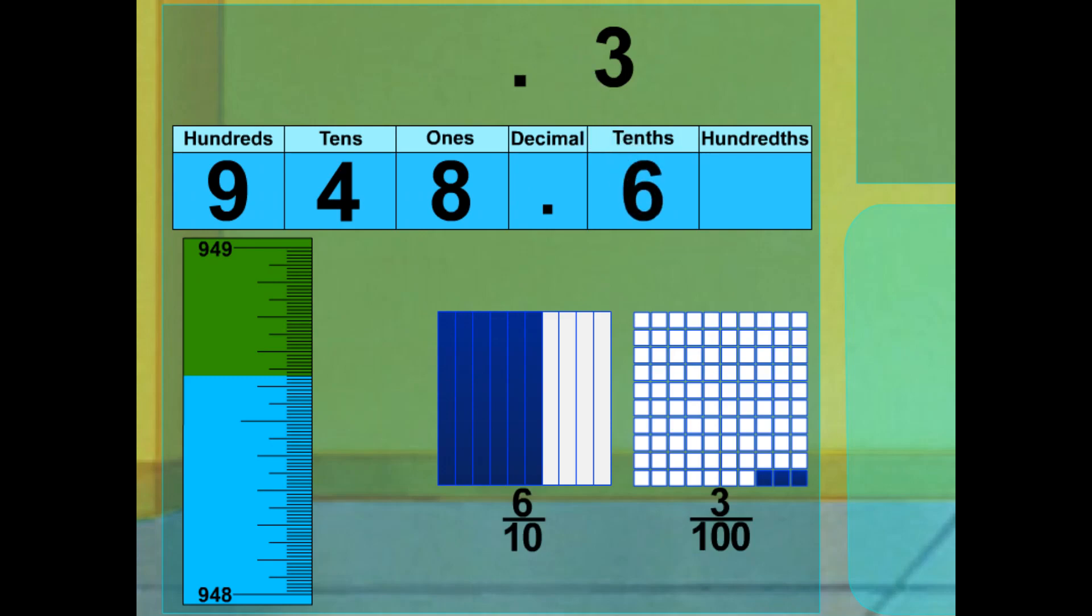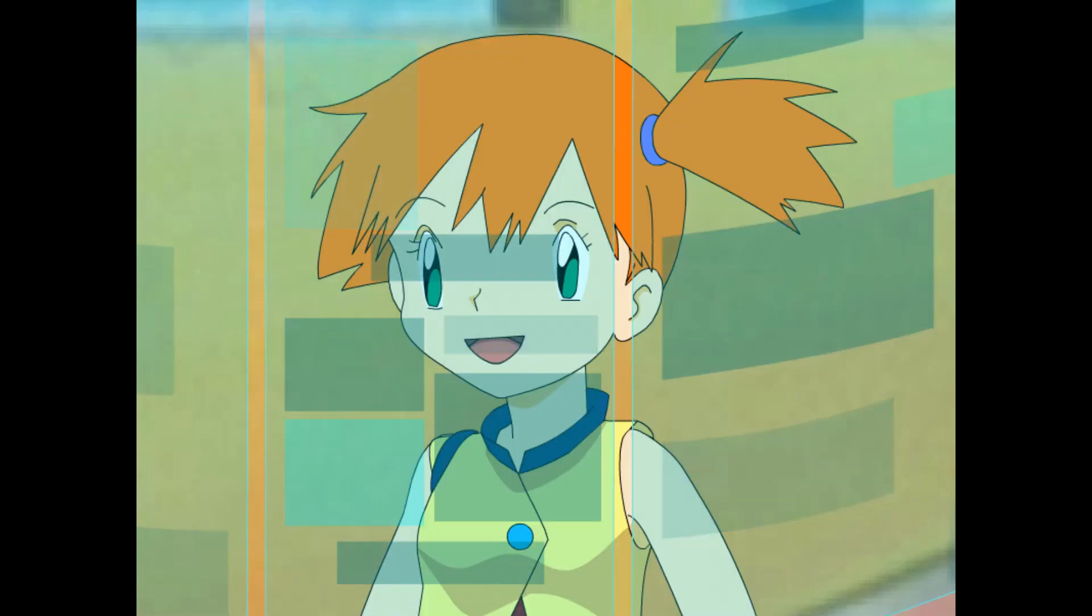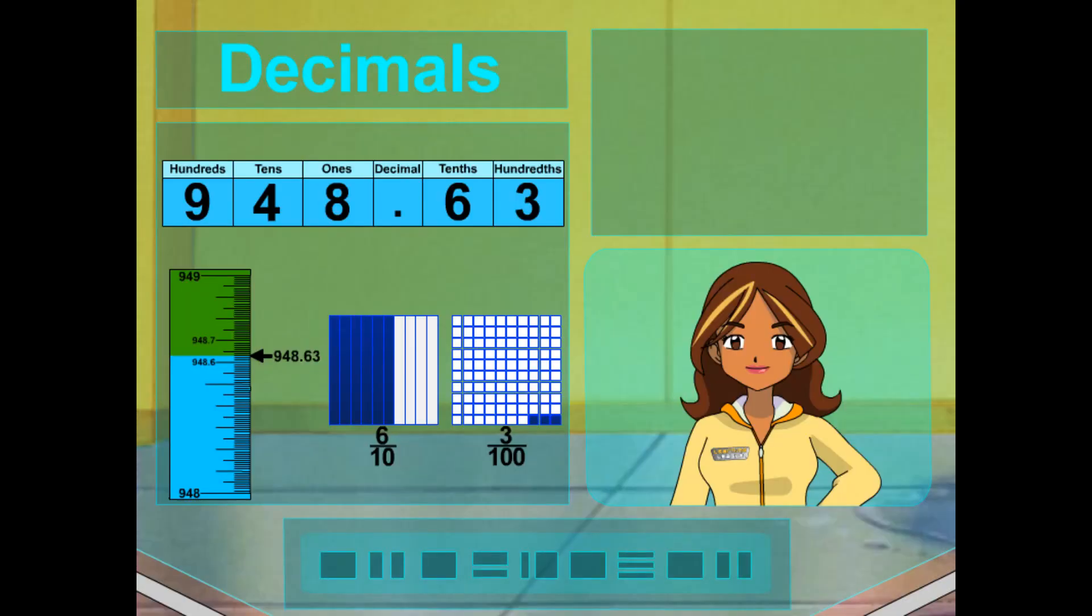Now, we're at the decimal point. This means the 6 goes in the tenths place, and then the 3 goes in the hundredths place. And, with the measuring stick, as you can see, 948.63 is between the whole numbers 948 and 949. In fact, it's between 948.6 and 948.7 on the tank's measuring stick. Yeah, but it gives an exact measurement of what the level is. After all, that is why we use a measuring stick to check. This one measures to the hundredths place. Right on! That's pretty small. One out of a hundred parts of one whole. That's like a crumb of a cookie. You're really getting it.